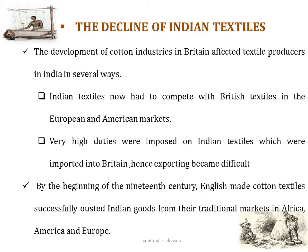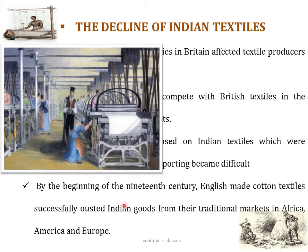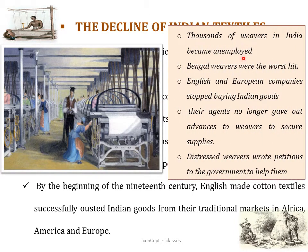Indian textiles started declining mainly because of the development of cotton industries in Britain, which affected textile producers in several ways. First, Indian textiles had to compete with British textiles in European and American markets. Second, very high duties were imposed on Indian textiles imported into Britain, making exporting difficult. By the beginning of the 19th century, English-made cotton textiles successfully ousted Indian goods from traditional markets in Africa, America, and Europe. As a result, thousands of weavers in India became unemployed, with Bengal weavers being the worst hit. English and European companies stopped buying Indian goods and no longer gave advances to weavers, leading many weavers to write petitions to the government for help.